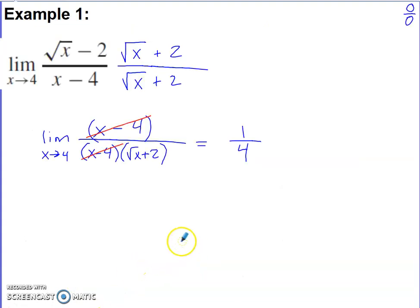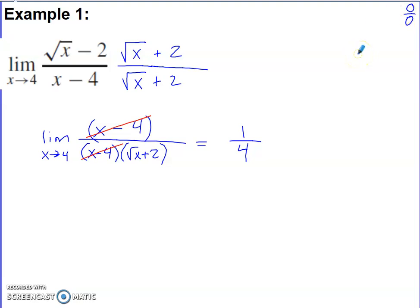The first limit we're going to check out: as always, what you want to do is try to plug in what x is approaching — 4 in this case. What you get is 2 minus 2 in the top, 4 minus 4 in the bottom: you get 0 over 0. That's an indeterminate form, a signal that we need to do something algebraically to cancel something between top and bottom and re-evaluate the limit after that cancellation.